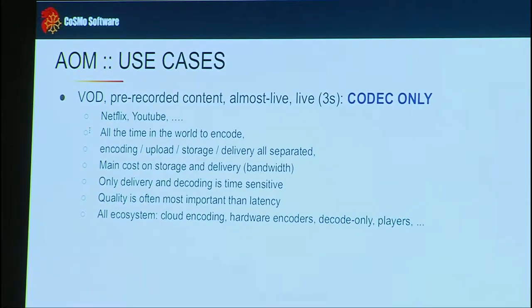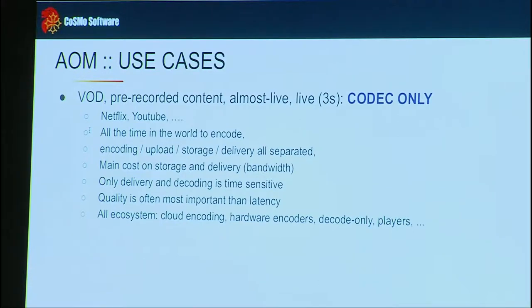At AOM you have two use cases represented. The first is video-on-demand or pre-recorded content — almost live, down to about three seconds. Those people are only interested in the codec. They are file-based and HTTP-based. Their two biggest problems are storage space and delivery bandwidth, but encoding time is not a concern. So they can encode very slowly if it produces a smaller file or better quality. The Netflix problem is simple: most US users have a 4GB data plan — how many hours of 1080p can they watch?